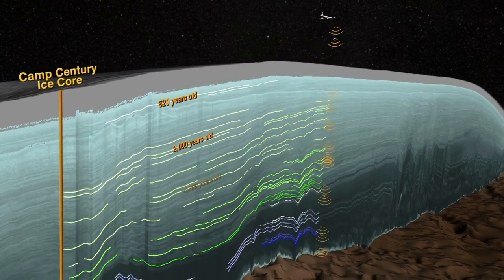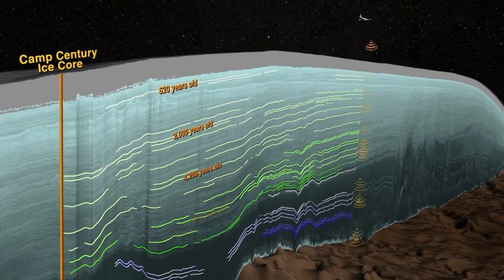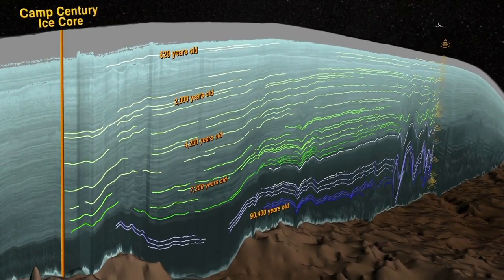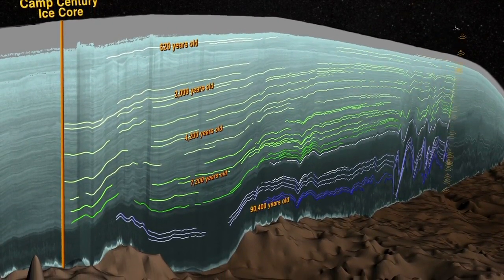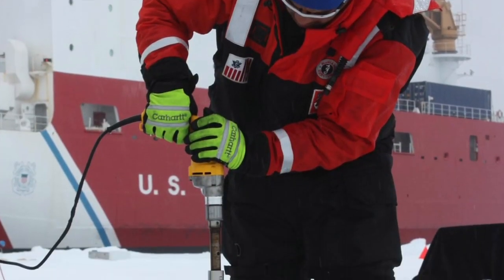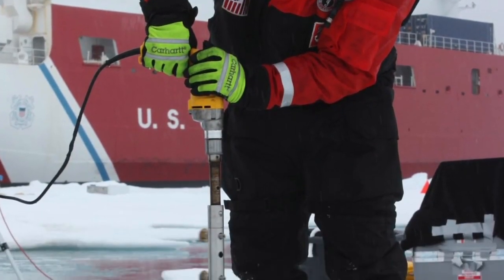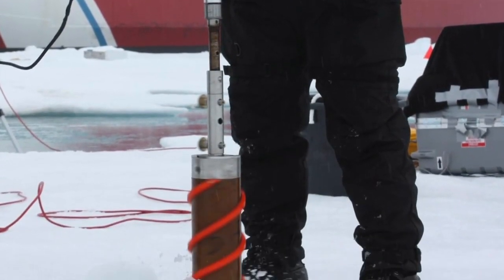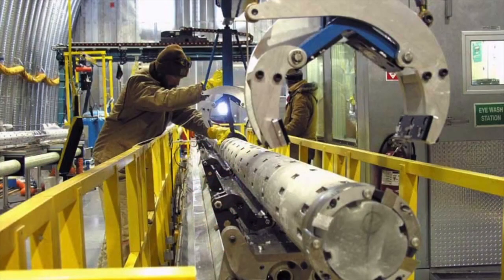Since the cores that scientists are retrieving can come from miles underground, they need to use something quite a bit larger than a straw. These tools can range from a small hand auger, such as the pico, which reaches 40 meters underground, to a huge drill, such as the disc drill, which can travel 4,000 meters underground.